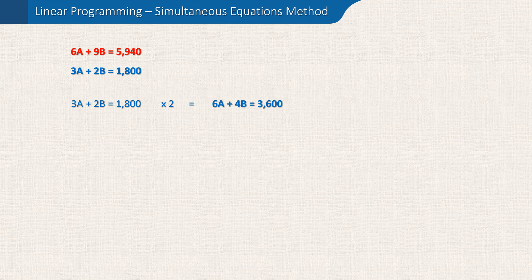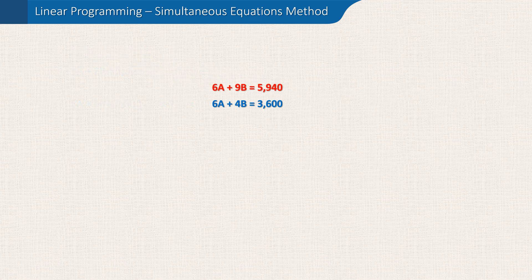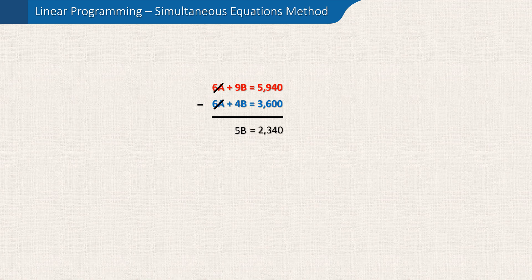Both our equations now have 6A in them, and we can eliminate A by deducting the second equation from the first. 6A minus 6A is 0, so these cancel each other out. 9B minus 4B is 5B, and 5940 minus 3600 is 2340. So 5B equals 2340. By dividing 2340 by 5 we can establish that B — the number of betas we need to produce — is 468.